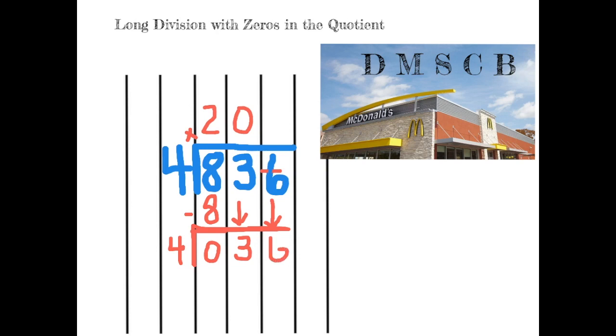Now you can see we have 36 divided by 4. 36 divided by 4 is 9. 9 times 4 is 36. 36 minus 36 is 0, and we have no remainder.